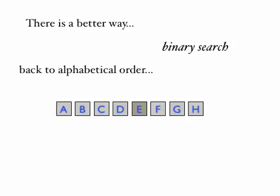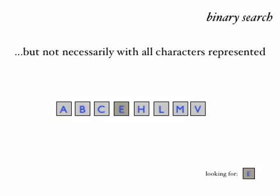This is called binary search. To conduct a binary search, we assume that the list is in alphabetical order in this case, or at least it's in a sorted order. That doesn't mean we need to have a song for every letter in the alphabet. Here's another list that's still in alphabetically sorted order but we're missing a few letters, and we're still looking for the song E, which now appears fourth in the list.